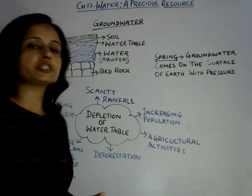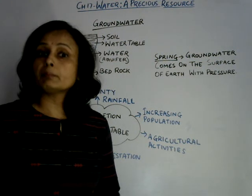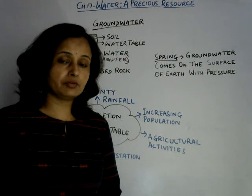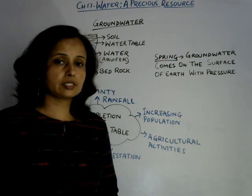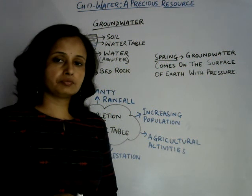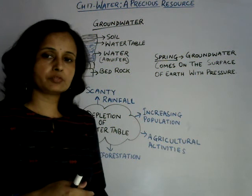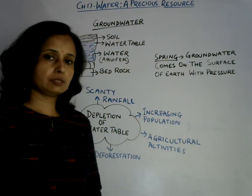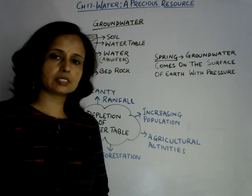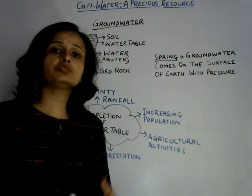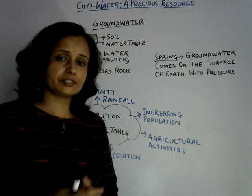Next: increasing population. Population is increasing, so demand for water is more, but the process of infiltration and seeping of water is less. The rate of seeping of water through the water cycle is less. Due to increasing population, more water is consumed for different purposes like cooking food, drinking, bathing, washing, and so many other reasons.